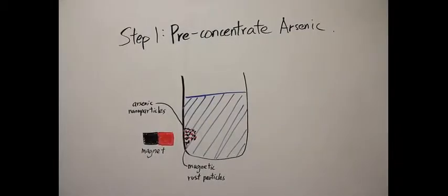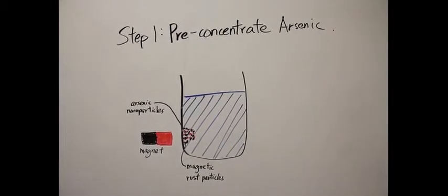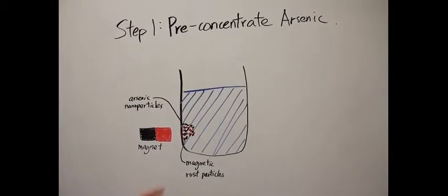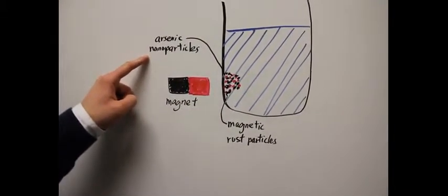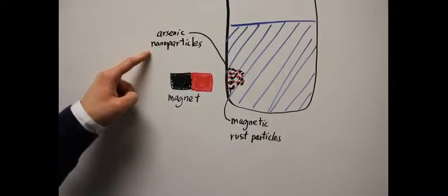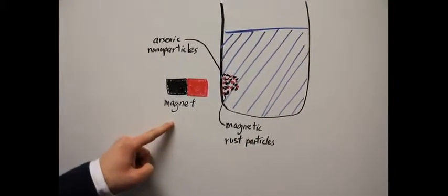In the first step of our technique, the user takes a sample of water from the well and puts in magnetic rust particles that bind naturally to the arsenic nanoparticles. Then he or she concentrates the magnetic arsenic cluster with a permanent magnet.